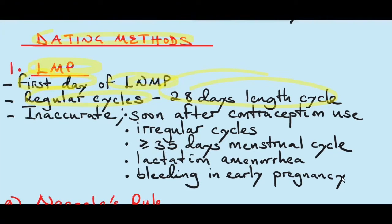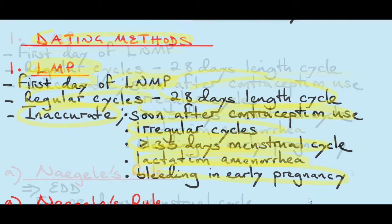In some cases, if you use the LMP to calculate the gestational age, it will give you false results — like soon after contraception use, because some contraceptive methods disrupt the pattern of the menstrual cycle. Also if a woman has irregular cycles, if her menstrual cycle is more than 35 days, because women with cycles more than 35 days don't ovulate on day 14 — most likely they ovulate on day 21. Also if a woman was having lactation amenorrhea, or if she was bleeding in early pregnancy. These are situations where the LMP will give you a false gestational age or EDD.